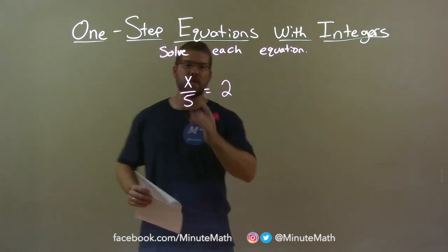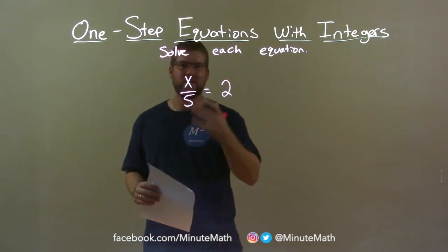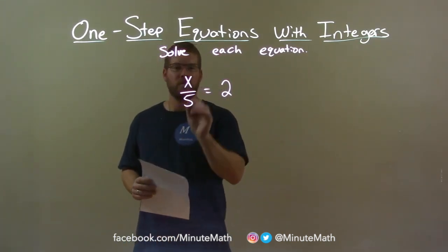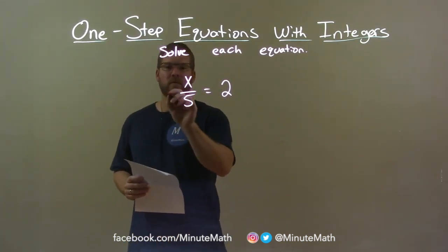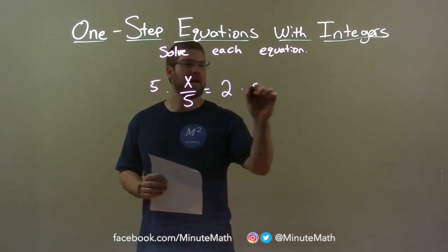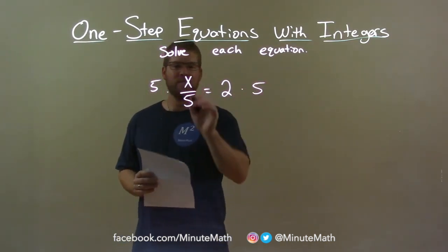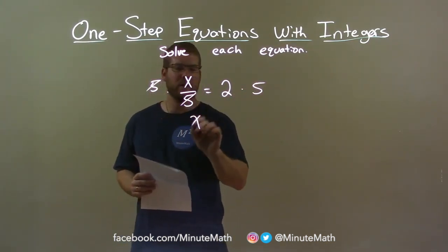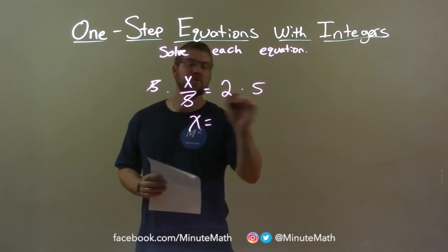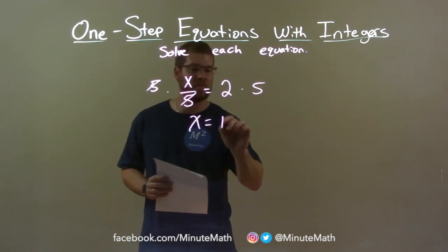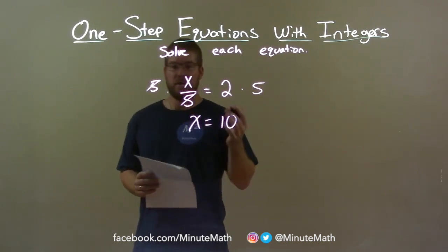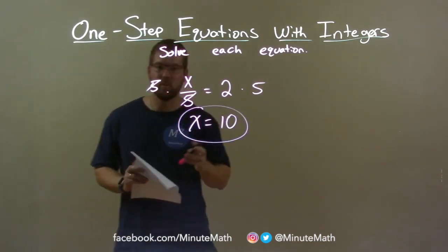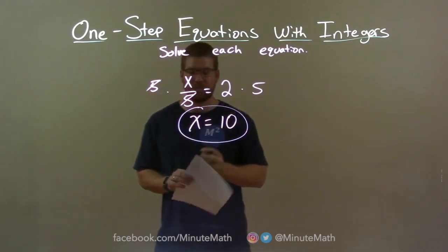Opposite of division is multiplication. We're dividing by 5, so if I multiply 5 on both sides, that cancels out, giving me x by itself. And 2 times 5 is 10. So now we're done. The final answer is x equals 10.